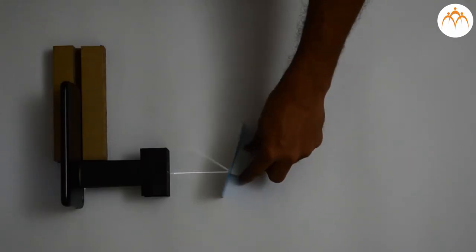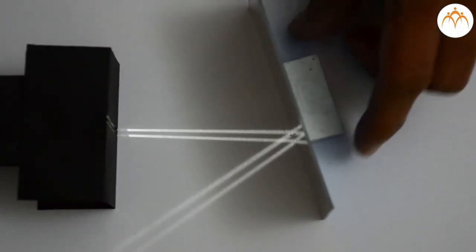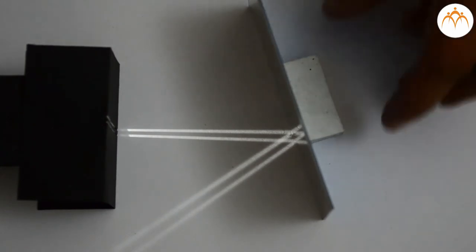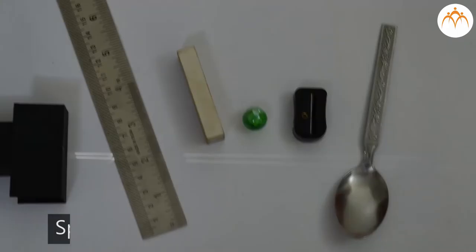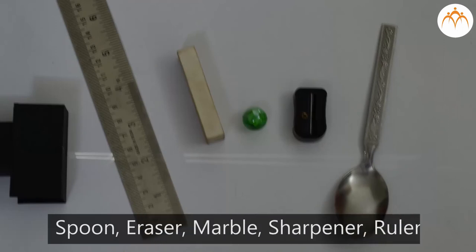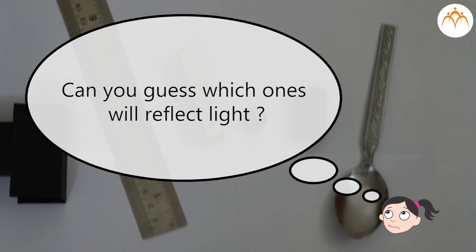Instead of one slit we can make two slits and understand the nature of reflection much better. Try replacing mirror with everyday objects like a spoon, eraser, marble, sharpener, ruler. Can you guess which ones will reflect light?